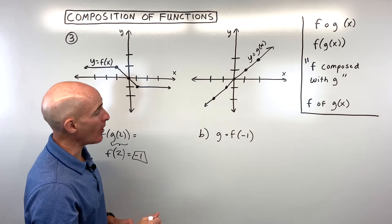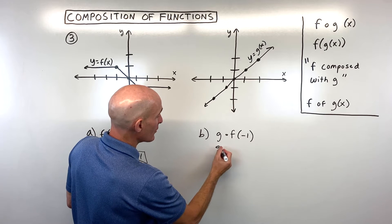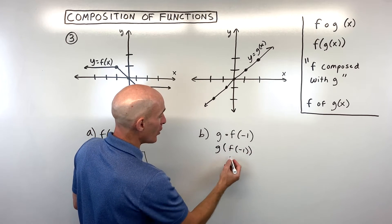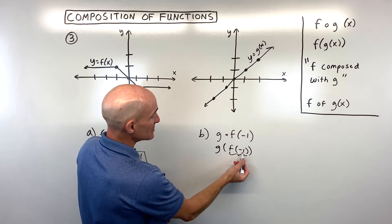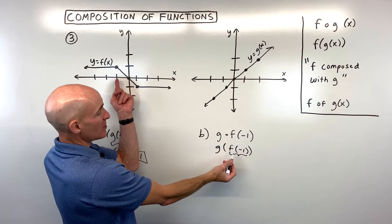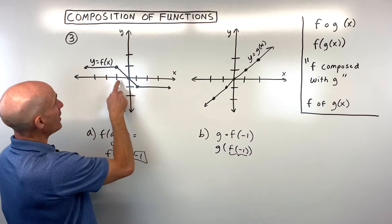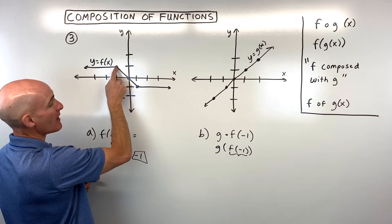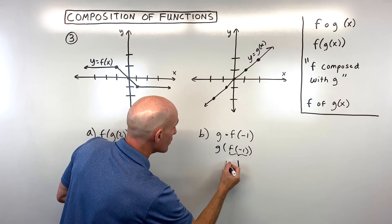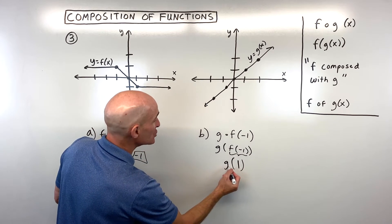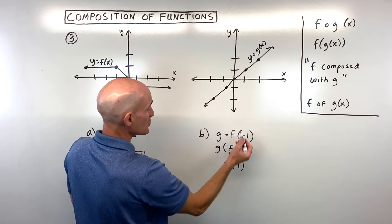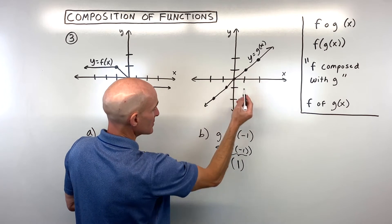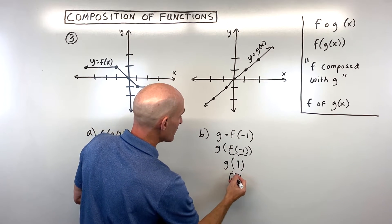For g of f of negative 1, starting on the inside, we go to our f function. When x is negative 1, our y value is positive 1. Now we go to our g function: when x is 1, we go up to the graph and our y value is also 1.